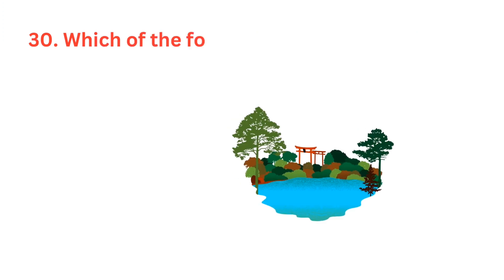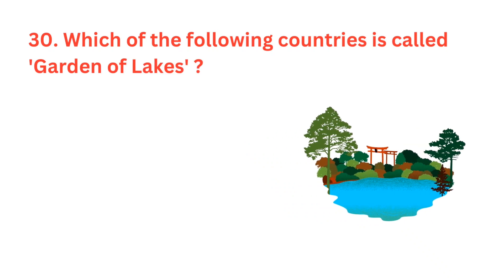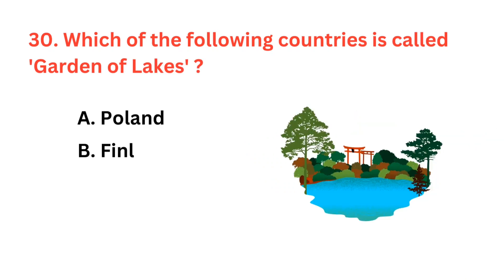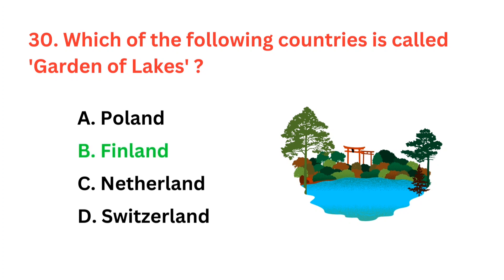Which of the following countries is called Garden of Lakes? The right answer is Finland, option B.